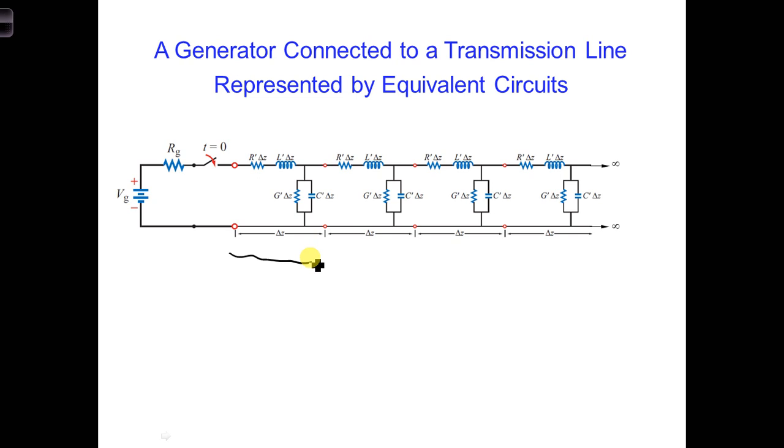That is, at time t equals zero plus, the battery can't see what is beyond the first delta-z transmission line segment, except to know that there's more homogeneous transmission line beyond it. And it certainly doesn't know what is at the end of the transmission line yet. How could it? Not enough time has elapsed for anything to move all the way down the transmission line.